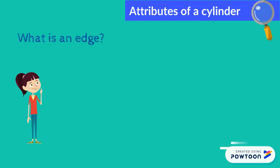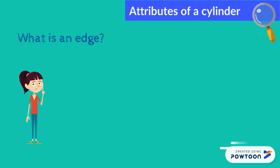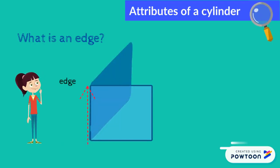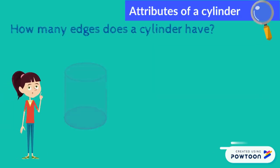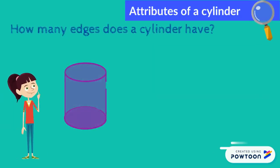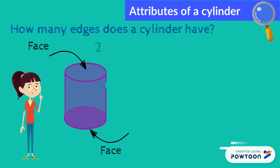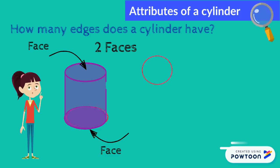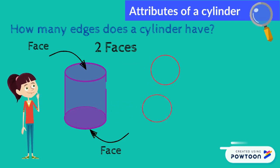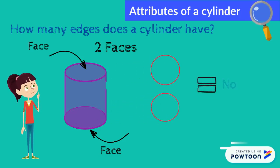Do you remember what is an edge? Correct! An edge is created when two faces meet. Now look at the cylinder — it has two faces. However, they are separated from each other. Therefore, a cylinder has no edges.